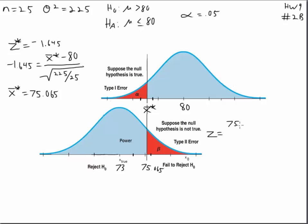So let's calculate a z score for that. 75.065 minus the true mean of 73. Now we still have the same standard error as before. With a sample size of 25, we'll take the population variance, divide it by that sample size, and then square root it.